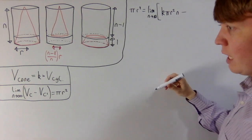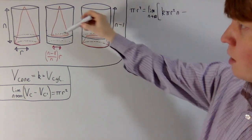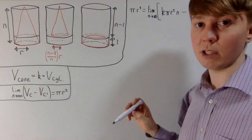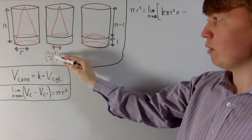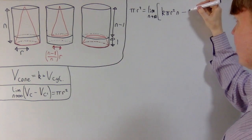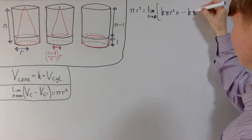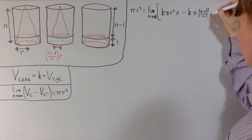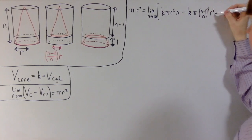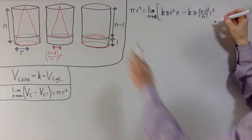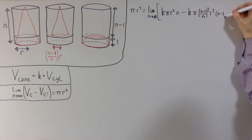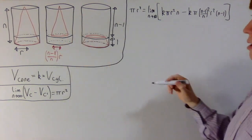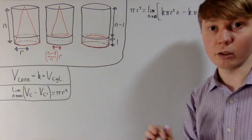For the volume of the next cone, the cylinder it's contained in is slightly thinner and shorter. Its height is n−1 and its radius is (n−1)/n times r. So VC dash = k·π·((n−1)/n)²·r²·(n−1), which is k·π·r²·(n−1)³/n², using the fact that the cone volume is always proportional to the volume of its cylinder.